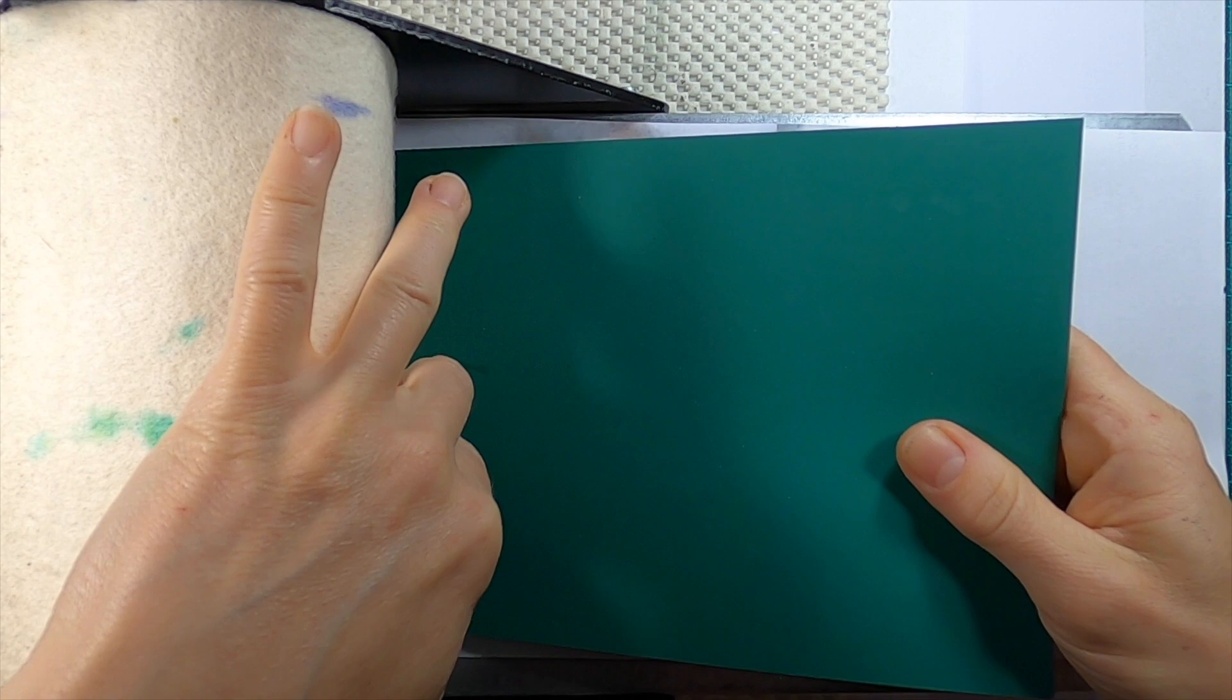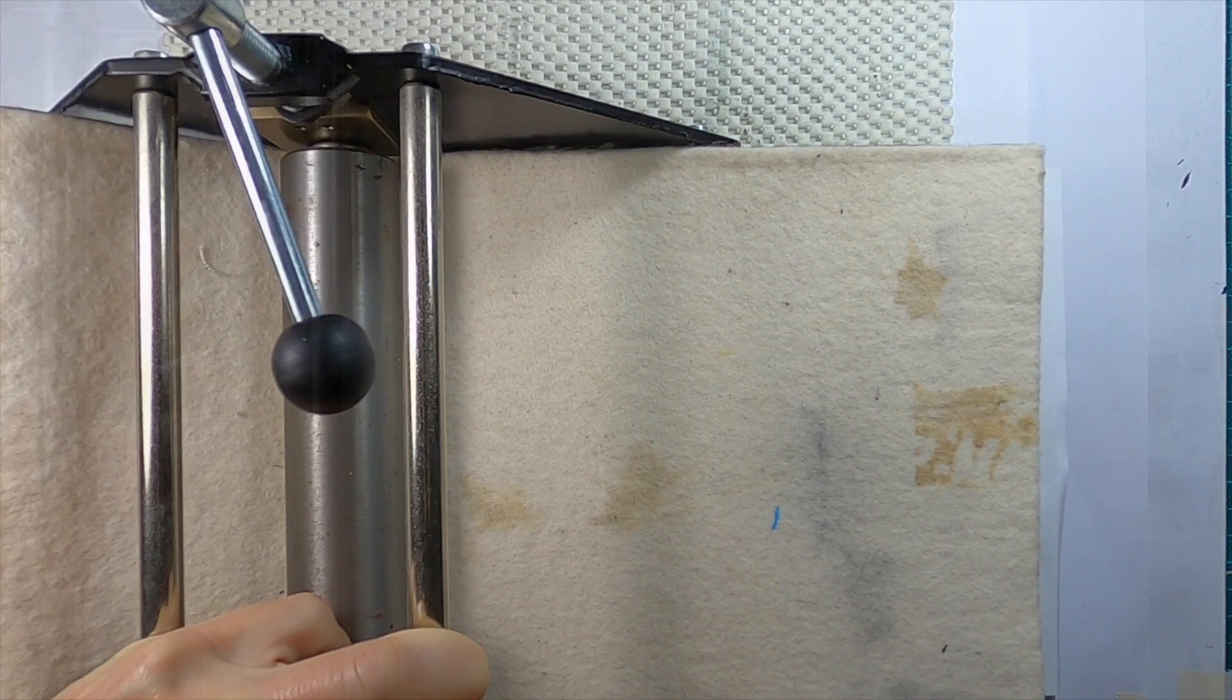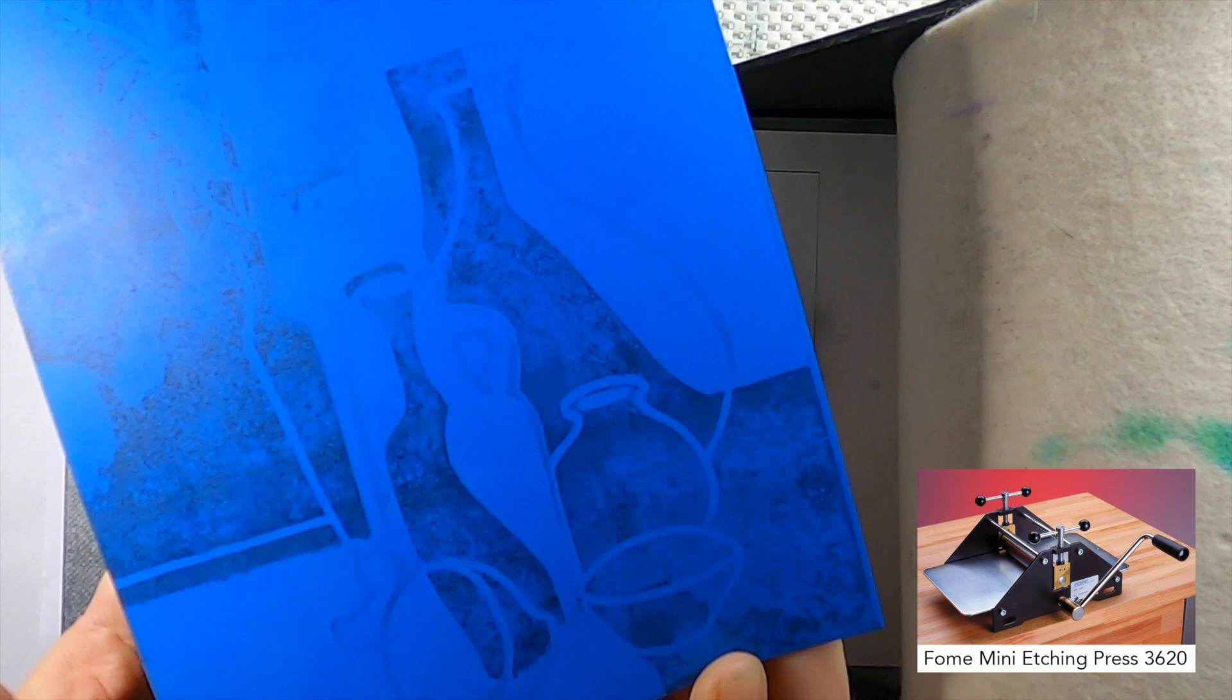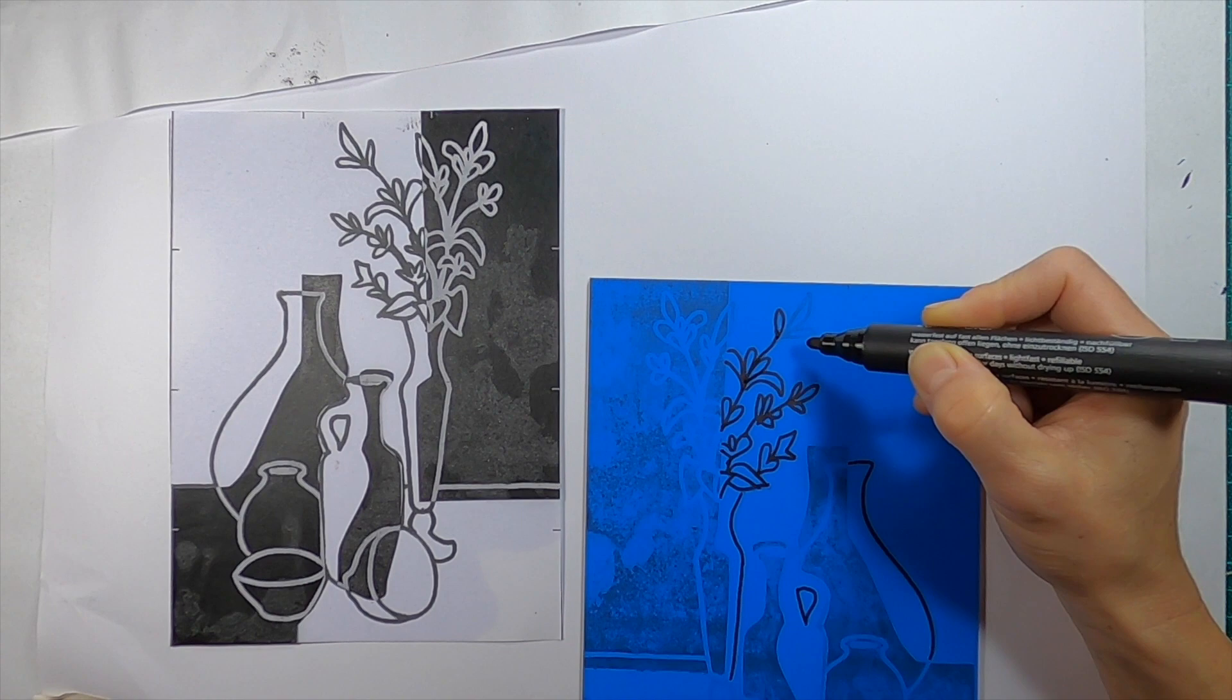Then line the lino up on top of the image and wind it through the press. The press needs to be very tight for this to work, so it should be quite hard to turn the wheel. This transfer method will ensure that your image is printed in reverse on the plate. So when you cut it out and print it, it'll print the right way, which is particularly handy if you have any text in your image. If it helps you can make the print clearer with a permanent marker.